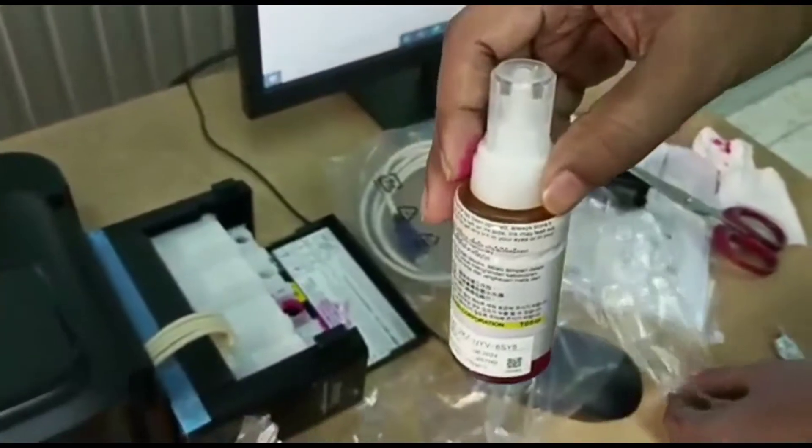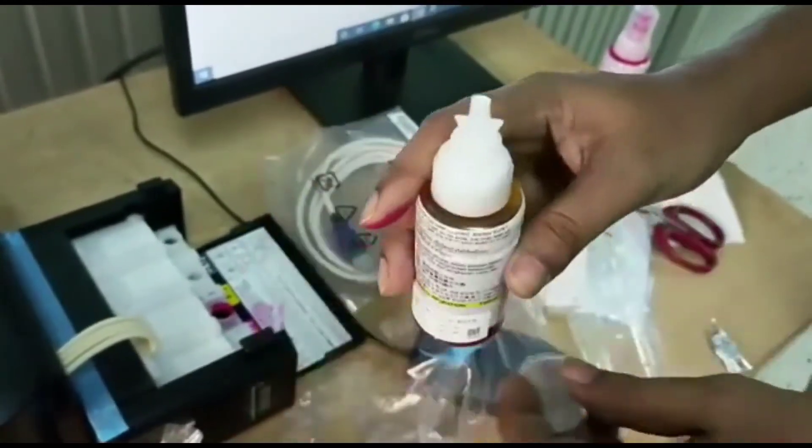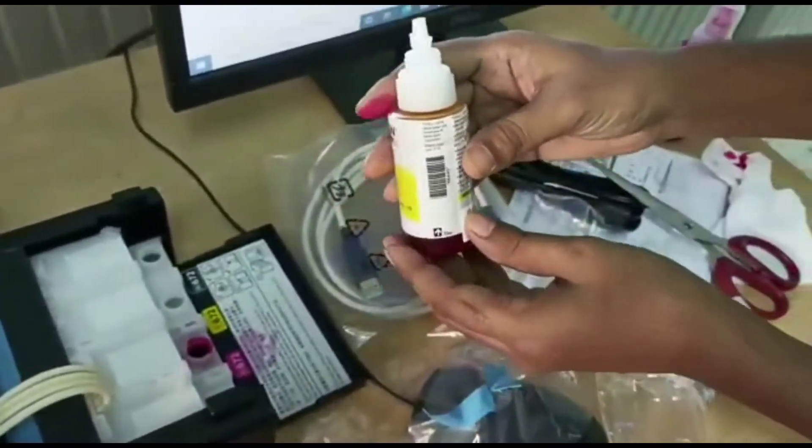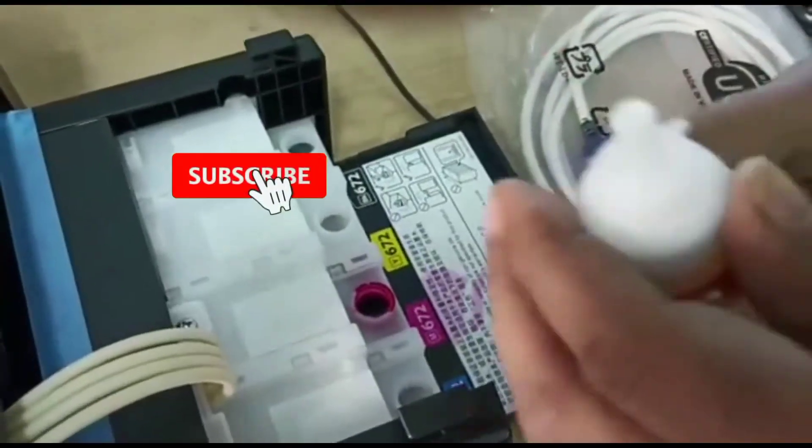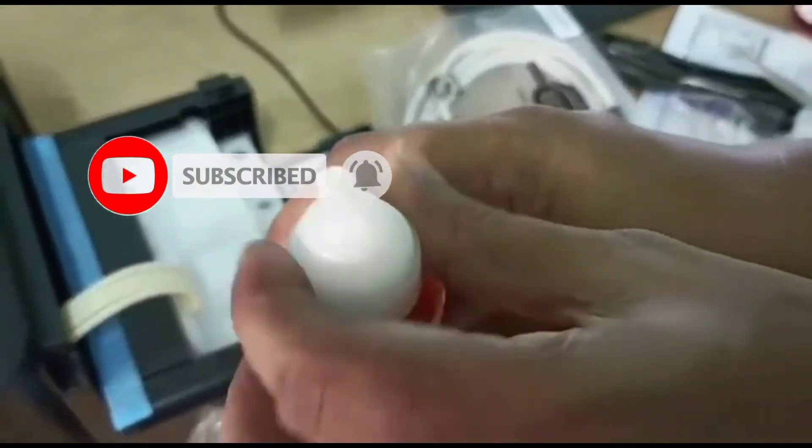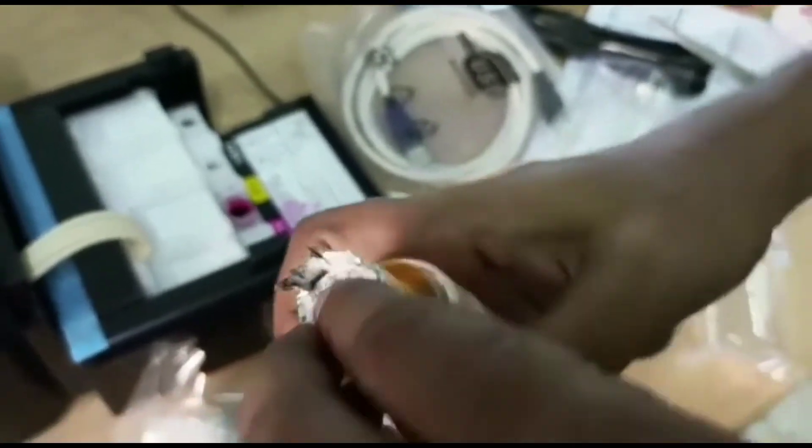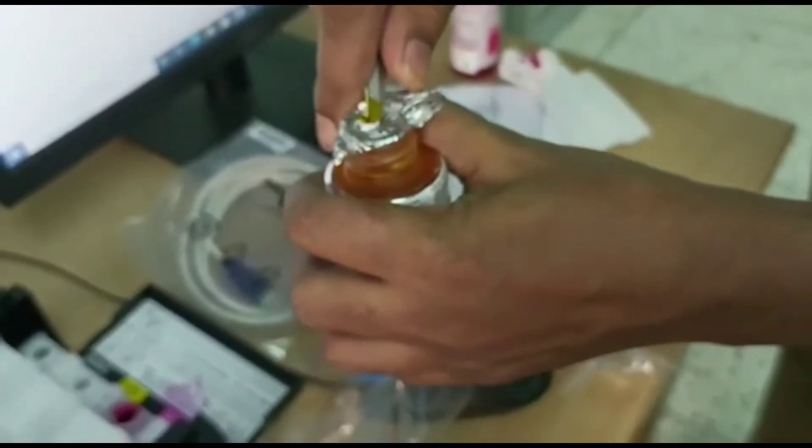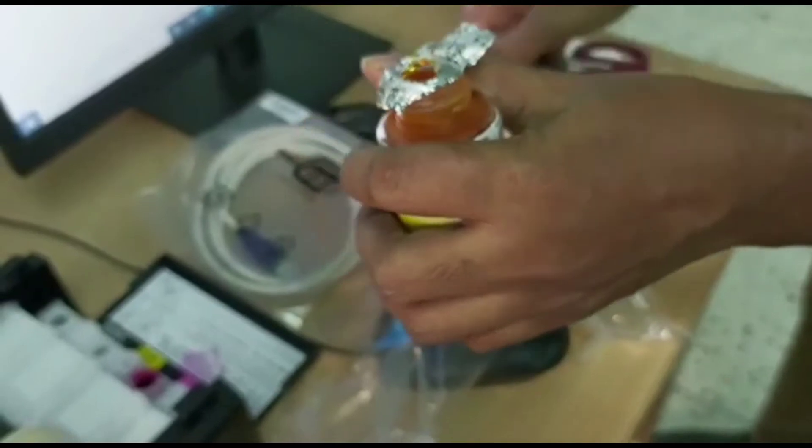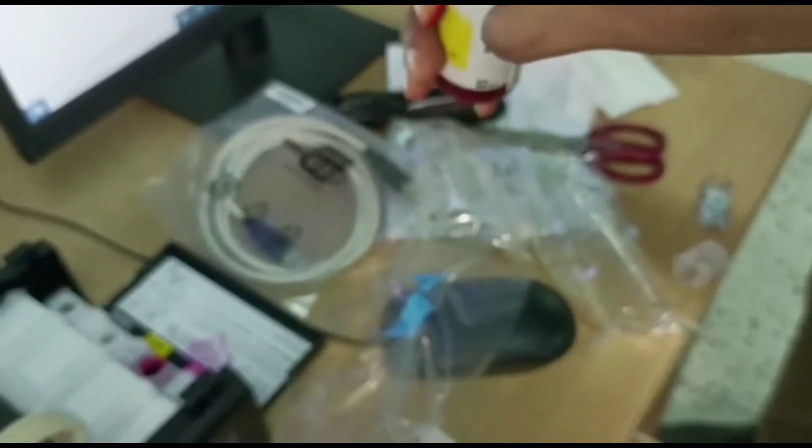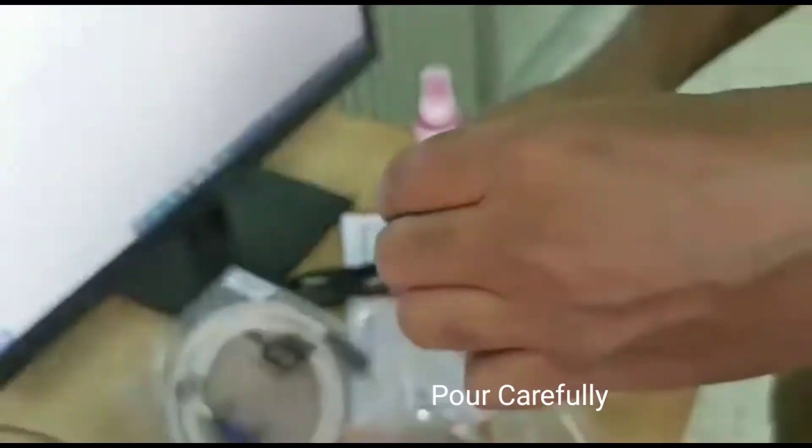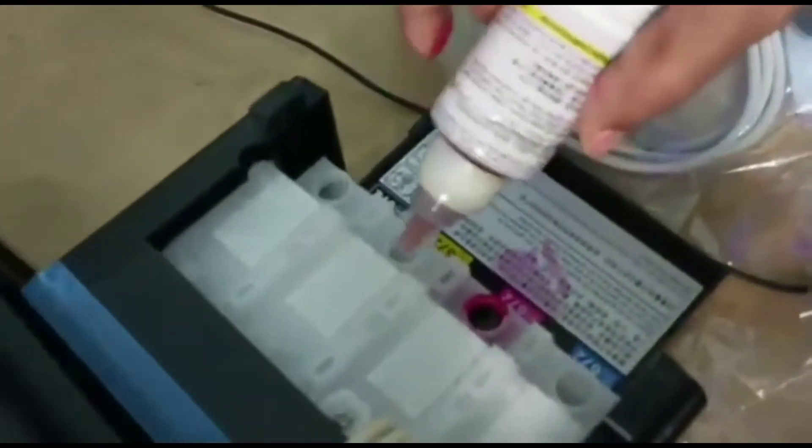This is yellow color, 664 code. Uncover cap, remove protector. Work carefully not to mistake. You punch slowly.